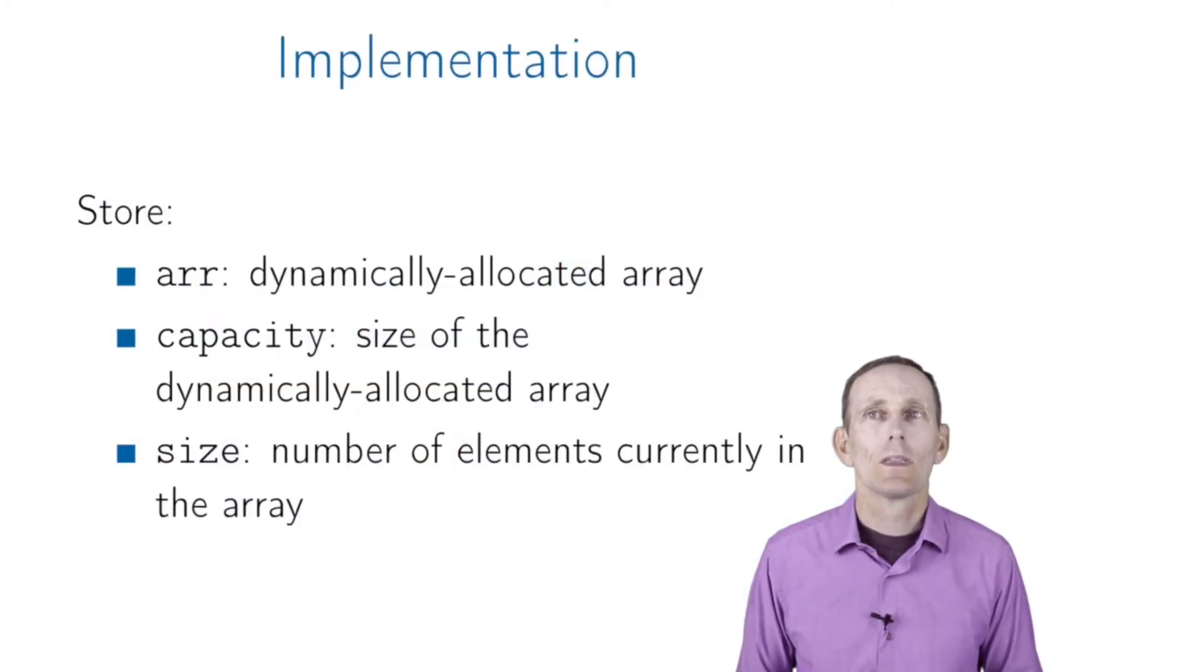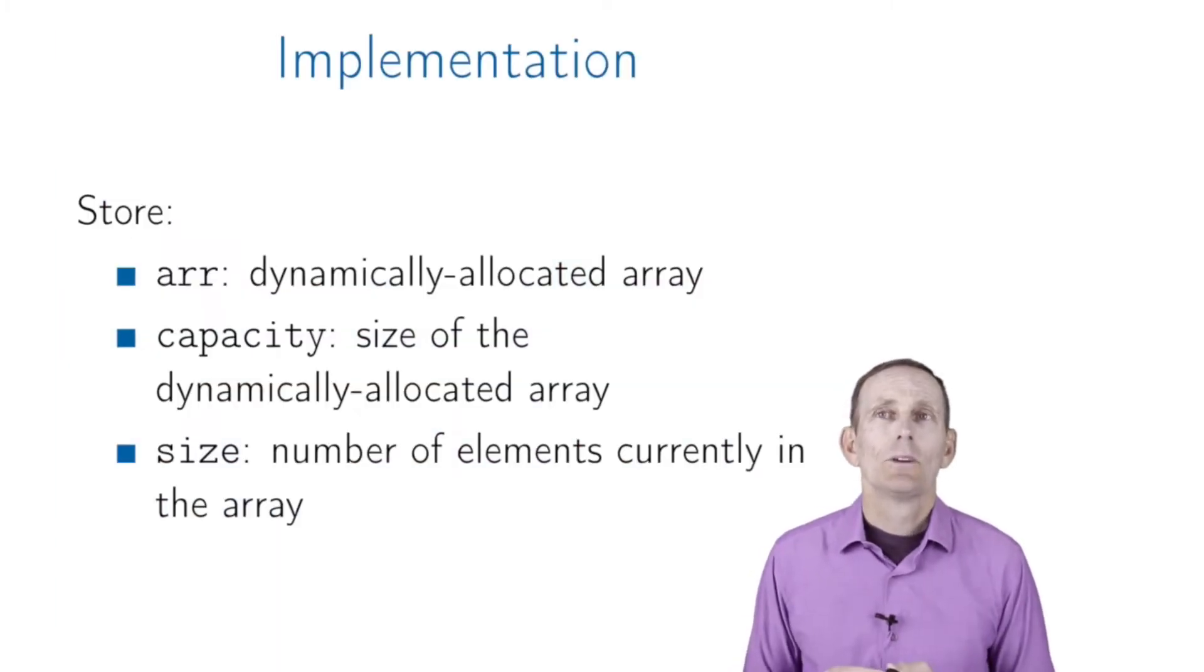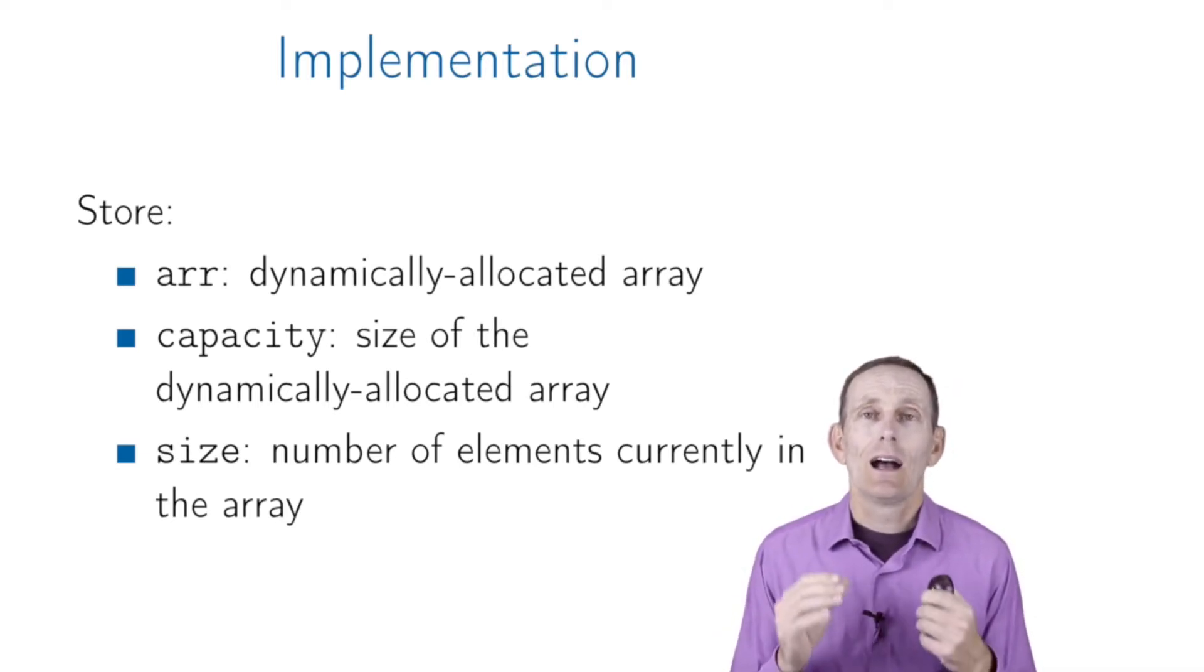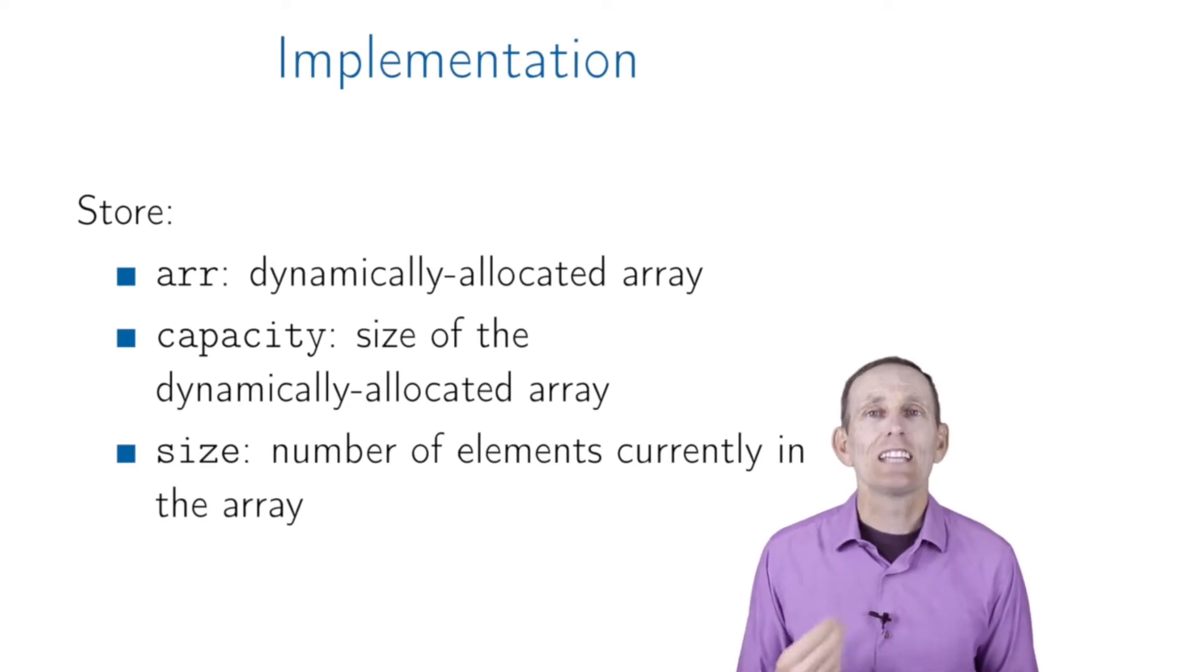How do we implement this? We're going to store arr, which is our dynamically allocated array. We're going to store capacity, which is the size of that dynamically allocated array, and then size, the number of elements that we're currently using in the array.